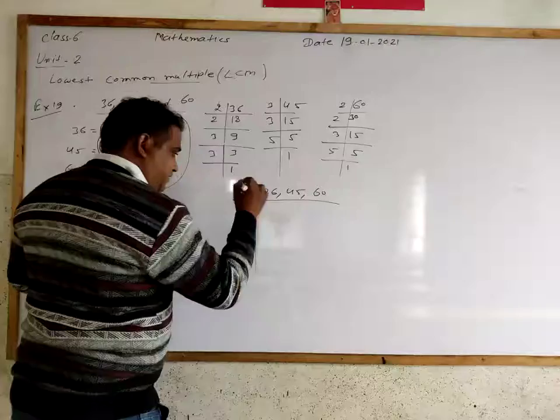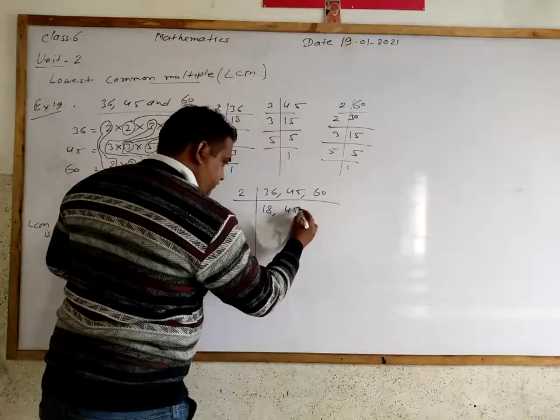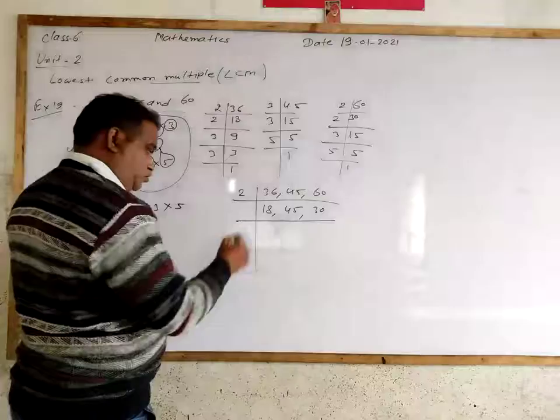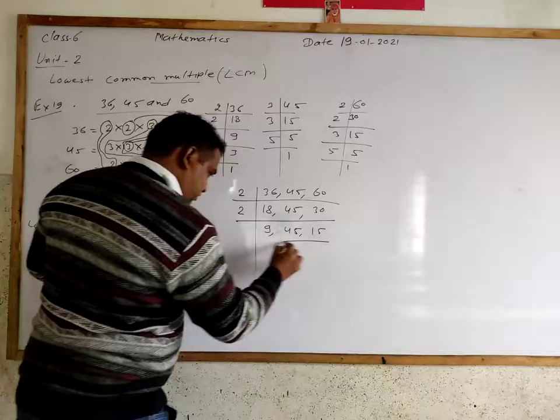So we divide by 2. Now 36 divided by 2 we get 18. 45 is not divided by 2, so we write 45. And 60 divided by 2, we get 30.